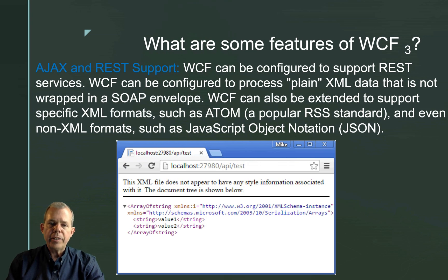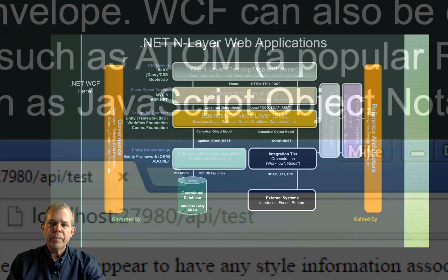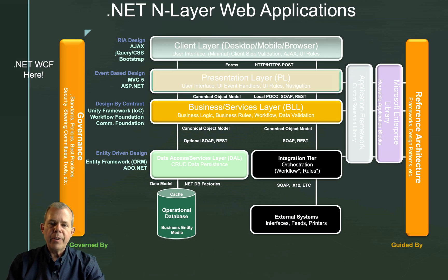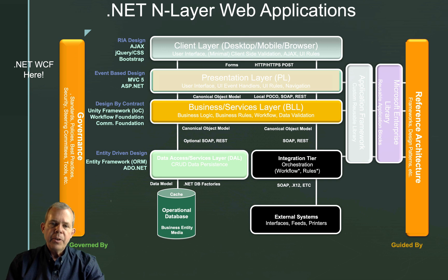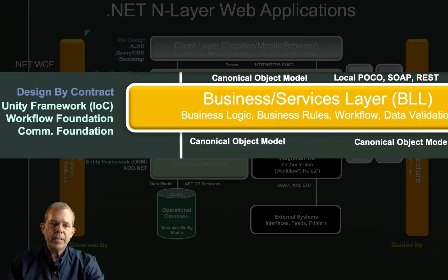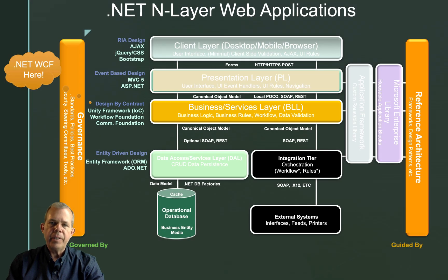Think of AJAX and REST — that's probably the most common thing, and that's the exact example we're going to code. If you're a full-stack designer looking at the features available in .NET and n-layer web design, where does WCF sit on the chart? The answer is in the center, in the business service layer — specifically the communications foundation section. That's the WCF, linking the database to the presentation layer.